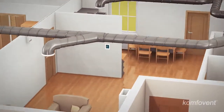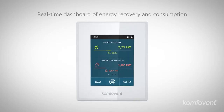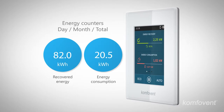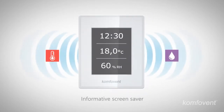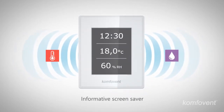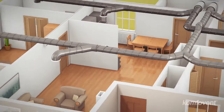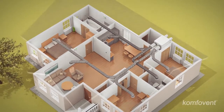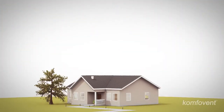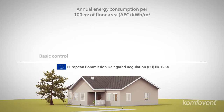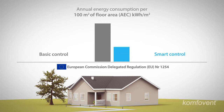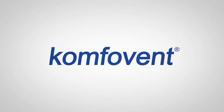Smart Control informs the user about the performance of the ventilation system. You can find out the heating energy savings and energy consumption of the air handling unit. An informative screen saver always shows the key indoor climate values and ventilation parameters. Special software allows you to connect and control your air handling unit remotely at any time. With Smart Control, you can operate your ventilation system comfortably and properly by selecting the most efficient settings. It has been confirmed that Smart Control reduces energy costs for ventilation more than two-fold. Let's save together.